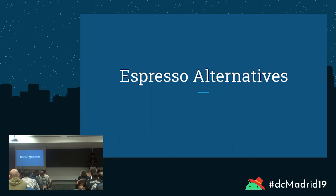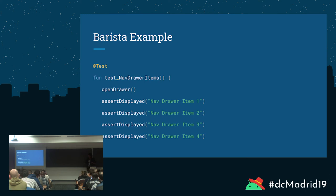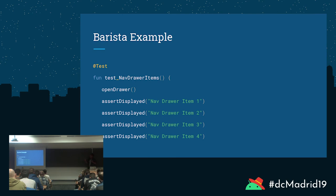Espresso alternatives. I recently came across two frameworks. Barista is an open source library that allows for simpler syntax for Espresso. Here's an example test that works with Barista — this is still Espresso, so you can still run it on Firebase Test Lab. The difference is that the syntax is much simpler: instead of onView perform action, this test simply says open the navigation drawer and check specific navigation items to see that they exist — all within a few lines of code.